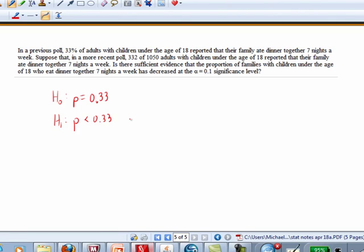Now what we want to do is verify that we can use the normal model in order to approximate the P value. To use the normal model, what do I need to be true? N times P times 1 minus P needs to be at least 10. N is 1,050. We haven't figured out P yet, have we? Oh yeah, we have. P is 0.33.